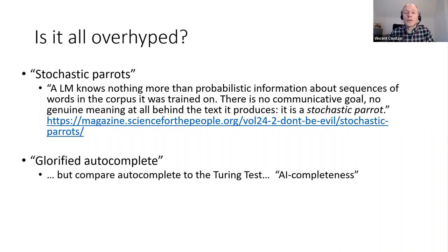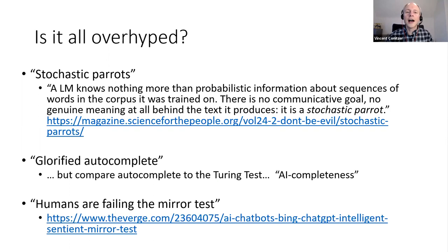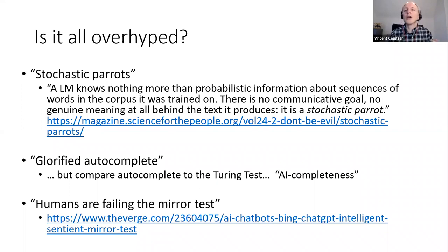Another phrase I saw recently is that 'humans are failing the mirror test' — we're looking at these systems and not recognizing that at some level it's really us talking back to us. I think that's a nice framing. There's some truth to it, but at the same time you have to be a little bit careful — in some ways it does seem to be doing some reasoning. With the cakes puzzle, I'm pretty sure no other human being ever exactly considered that particular example, and it figured out on its own what we might have said.